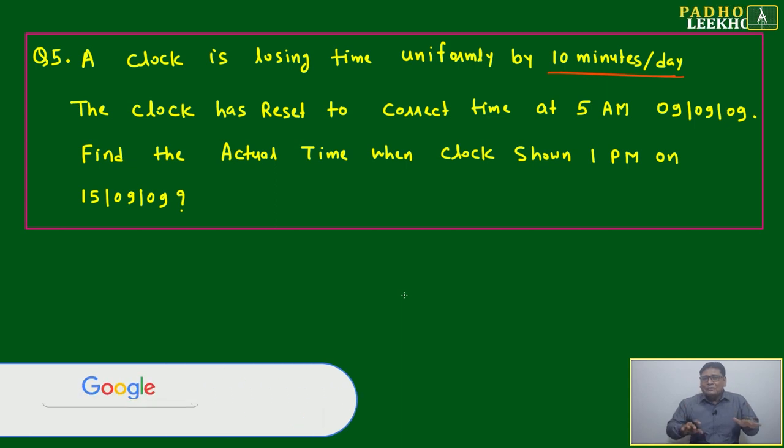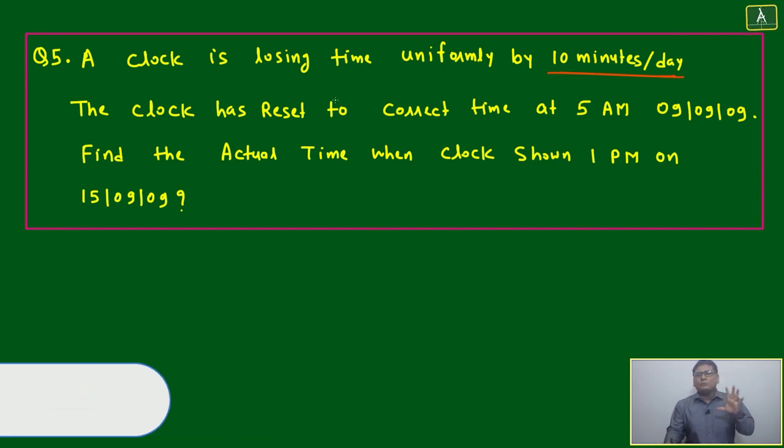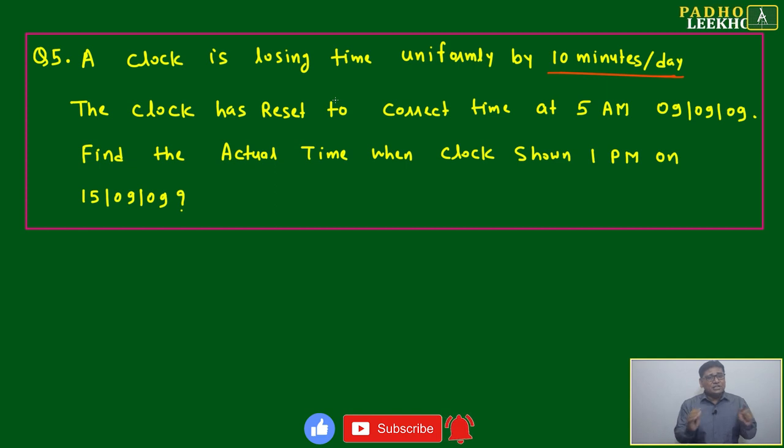To make the degree of difficulty or complexity less, we are assuming they are losing time uniformly. But a mechanical system with a spring, like an analog watch, will never be uniform. Ideally, it cannot be uniform because the spring expansion and compression is directly proportional to the length and force. But to make it easy, this is the idea I'm giving you.